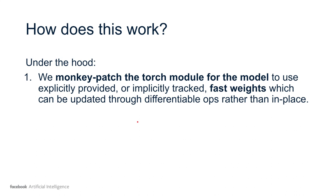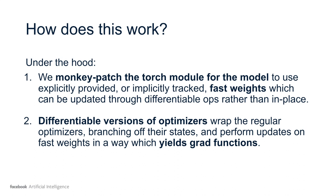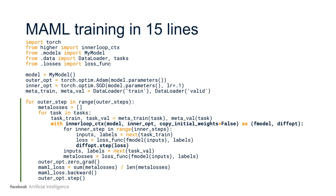How does this work? Under the hood, we're going to be monkey-patching the torch module for the model you're using in order to implicitly track the history of the weights over time, over the unrolled training loop, so that they can be updated with differentiable operations in the optimizer rather than in place. Monkey-patching means we're going to be at runtime creating a copy of our Python object and modifying its behavior to functionally replicate the original module based on the original module state, but with slightly different behavior when it comes to tracking the updates to the model. We also provide differentiable versions of optimizers that wrap the regular optimizers and branch off their states. These perform updates on the implicit weights of the patched modules in a way that yields graph functions, tracking the entire history of those parameter updates on an implicit backward graph.